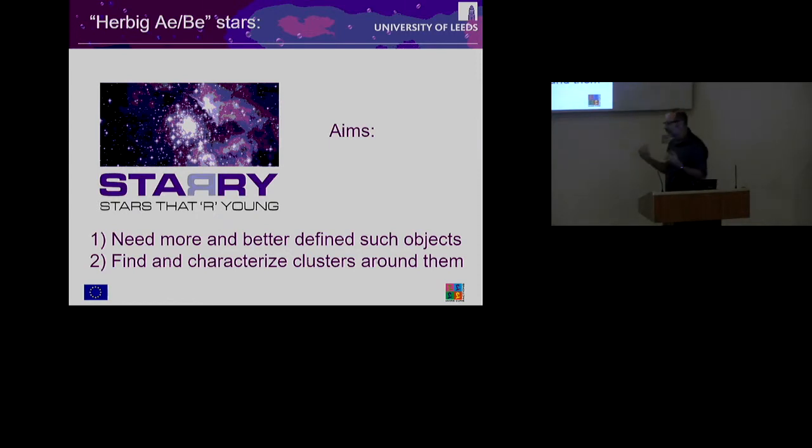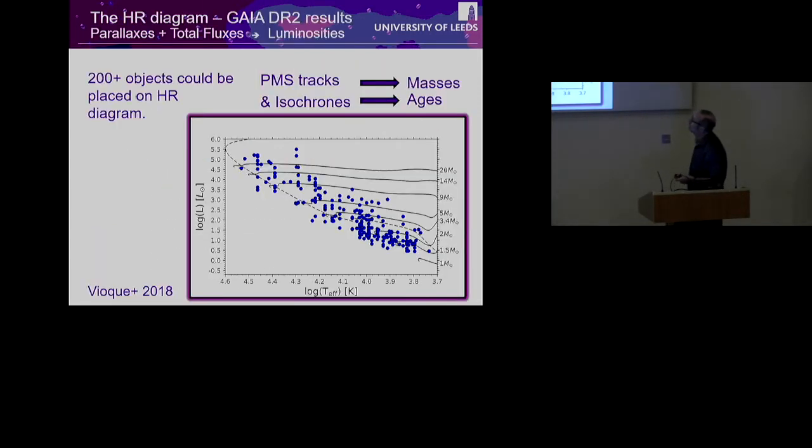The idea is, let's now use Gaia to make a proper selection of Herbig stars, because just like with the white dwarfs, everything that we know so far is quite anecdotal. No systematic study of these stars has occurred. And secondly, we can then look for clusters around these stars and see whether they play a role in their formation. We used the master sample first. From the master sample of about 240 that is available, we applied all the quality, the parallax quality criteria, got some Bayesian distances, and managed to get 200 objects on the HR diagram.